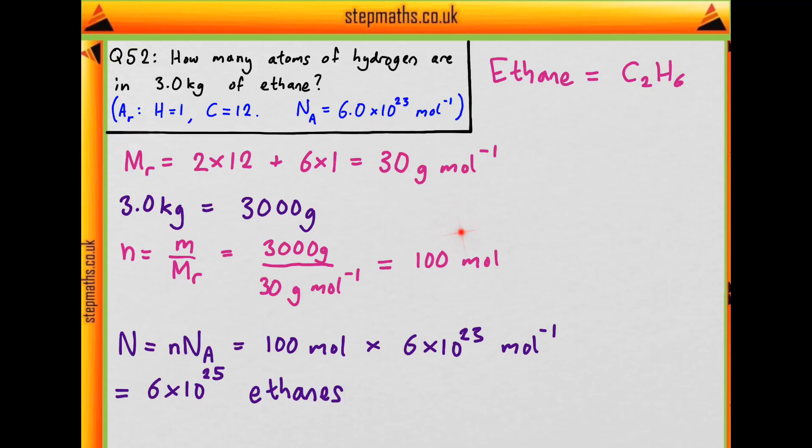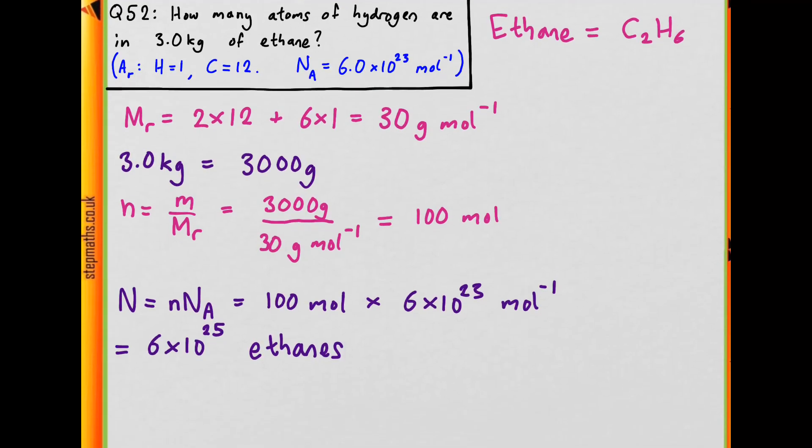But we need the atoms of hydrogen. So if there are 6 atoms of hydrogen in one ethane, what do we do now? The number of atoms of hydrogen is 6 times 10 to the 25 times 6, because we have 6 atoms of hydrogen in the molecule. So this comes out as 36 times 10 to the 25, because that's 6 squared. But in standard form, remember we need to change to 3.6 times 10 to the 26.